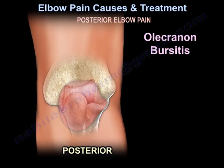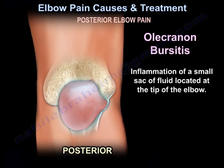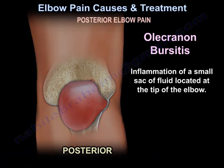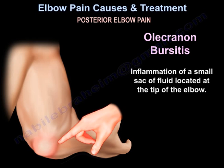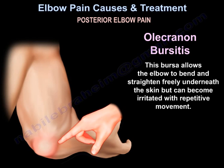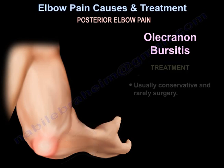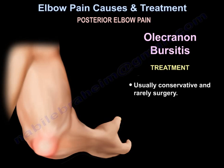Olecranon bursitis is inflammation of a small sack of fluid located at the tip of the elbow. The bursa allows the elbow to bend and straighten freely underneath the skin, but can become irritated with repetitive movement. Treatment is usually conservative and rarely surgery.